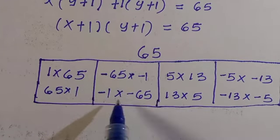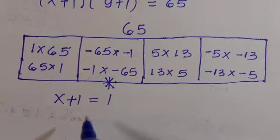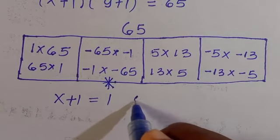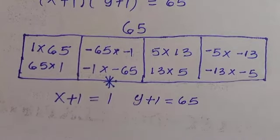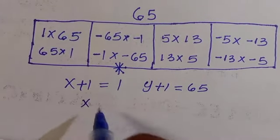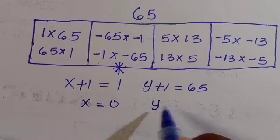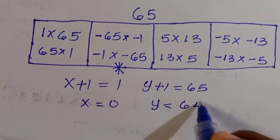For the first case, with (x plus 1)(y plus 1) equals 65, we set x plus 1 equals 1 and y plus 1 equals 65. This gives x equals 0 and y equals 64.